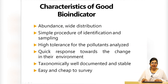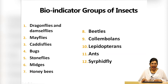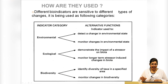The groups of insects that act as bioindicators include damselflies, dragonflies, mayflies, caddisflies, bugs, stoneflies, honey bees, beetles, lepidopterans, and ants. They let us know about environmental and ecological changes and are also used at a biodiversity level.